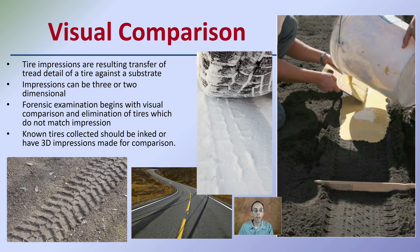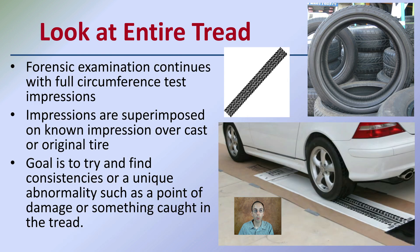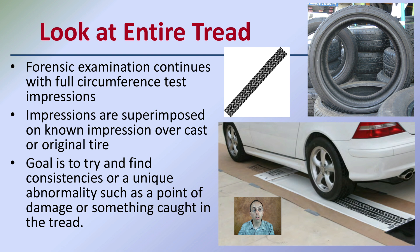Known tires collected should be inked and have 3D impressions made for comparison purposes. You want to look at the entire tread, not just a small section. Forensic examination continues with a full circumference test of the impressions — you ink the entire circumference of the tire, not just a small section. Impressions are superimposed on known impressions over the cast or the original tire. The goal is to find consistencies or a unique abnormality, such as a point of damage or something caught in the tread, to match that particular tire to its presence at the crime scene.